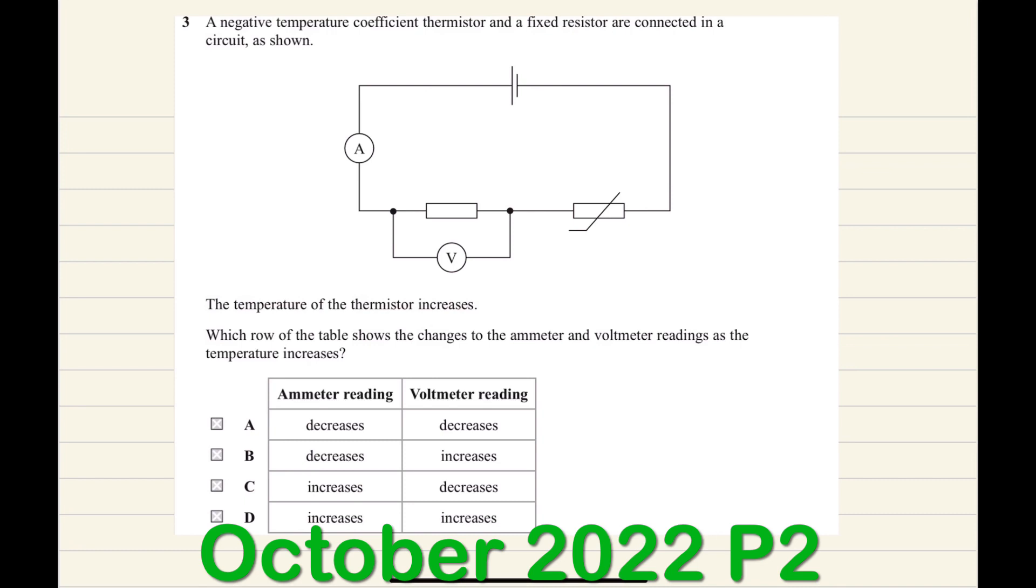When the temperature of the thermistor increases, the resistance of the thermistor decreases. The thermistor and the fixed resistor are connected in series.